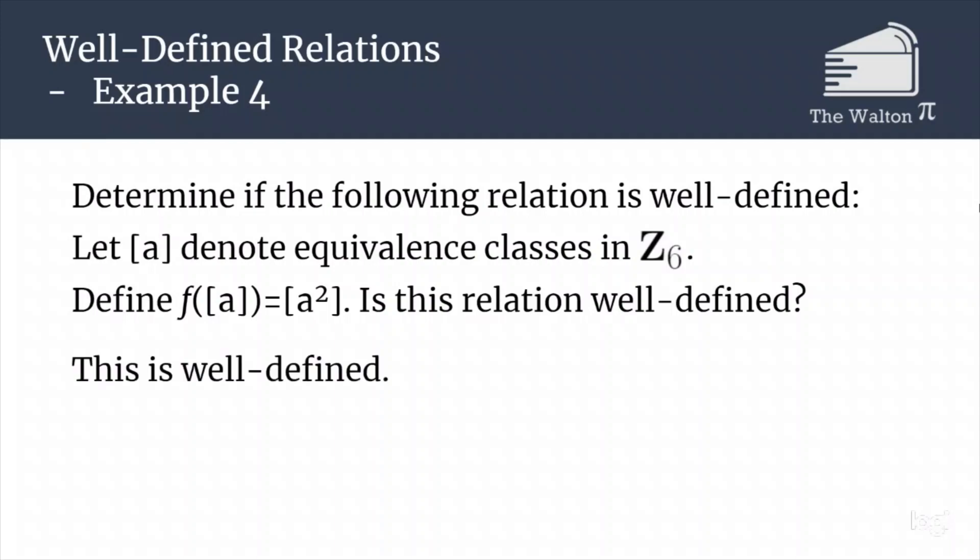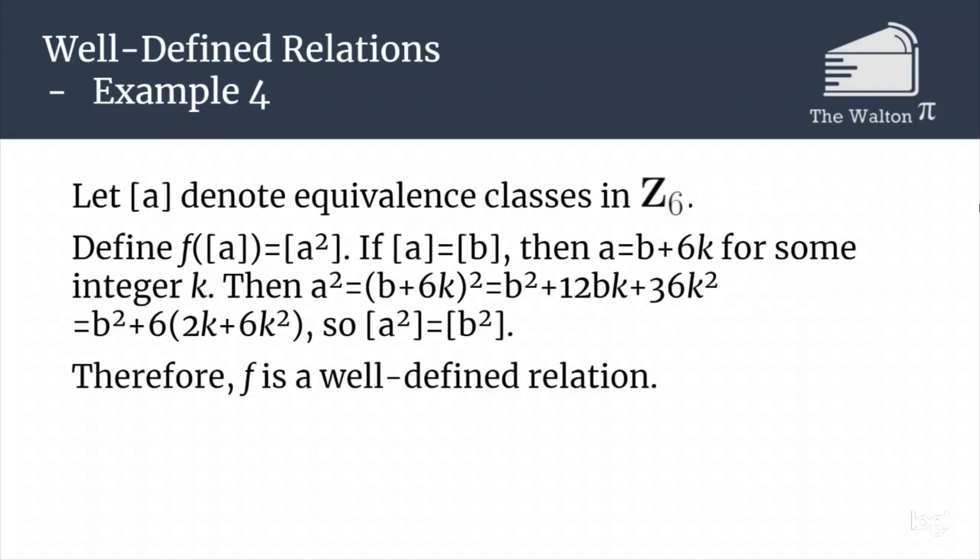Hopefully you were able to figure out that this is going to be well-defined. The reason is as follows: define f([a]) = [a²], and assume that [a] = [b] in Z6, so a = b + 6k for some integer k. Then a² = (b + 6k)² = b² + 12bk + 36k² = b² + 6(2bk + 6k²). Since 2bk + 6k² is an integer, b² ≡ a² mod 6, which tells us that [a²] = [b²]. Therefore f([a]) = f([b]), and f is a well-defined relation.